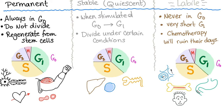Stable, or quiescent, cells. They are in G0, but not permanently like the previous type. They can get stimulated and move from G0 to G1. So they divide only under certain conditions, such as hepatocytes, or liver cells.